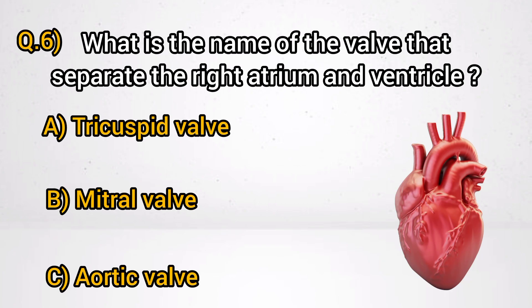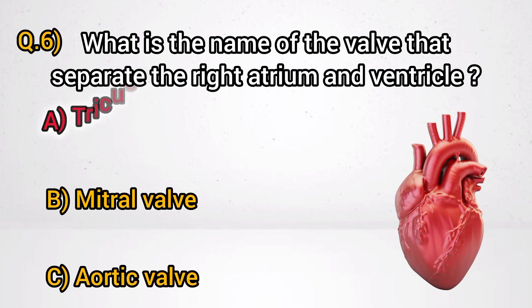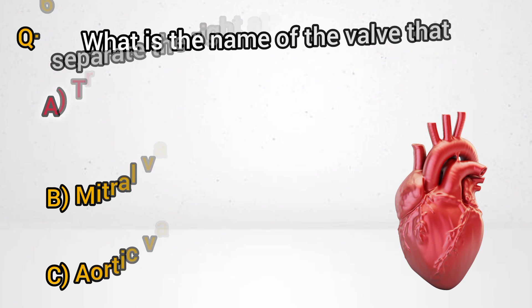Question 6: What is the name of the valve that separates the right atrium and ventricle? Answer A: Tricuspid valve.